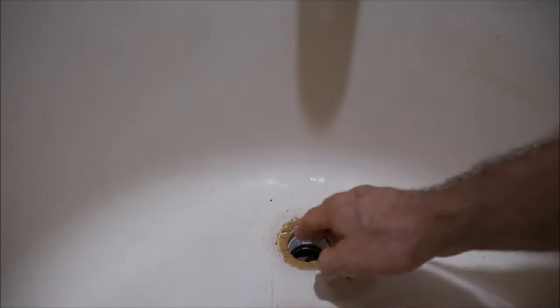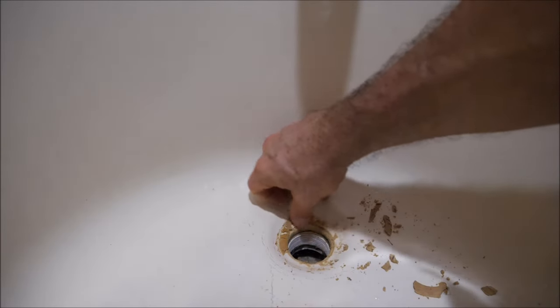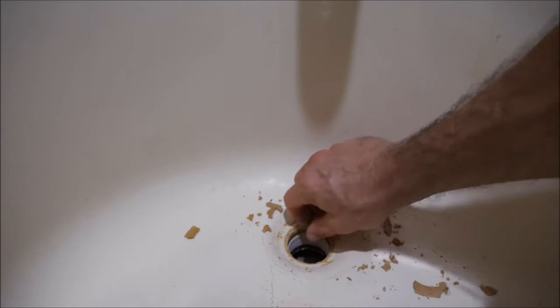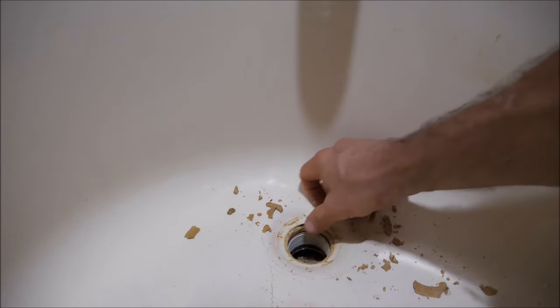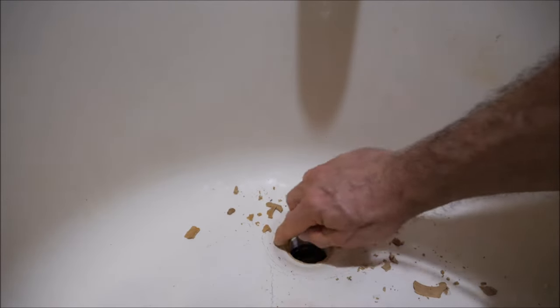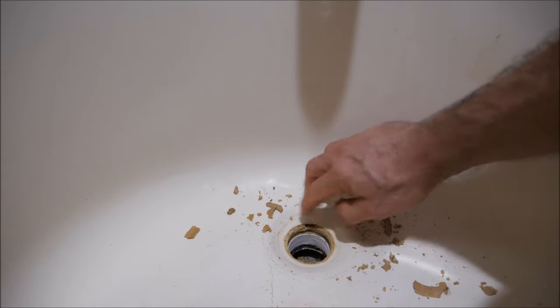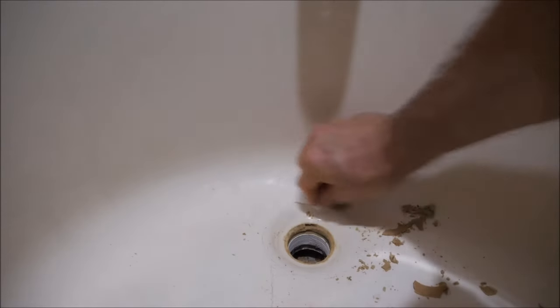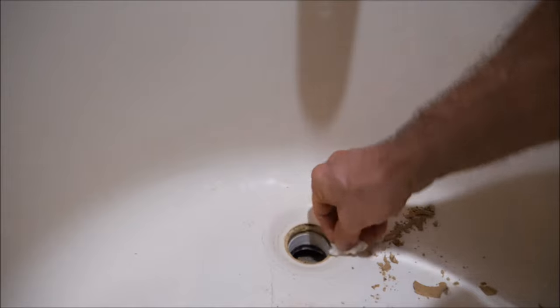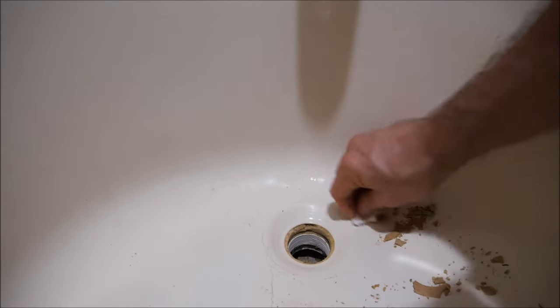All right, naturally before you put the new drain in, you want to get rid of the old plumber's putty surrounding the drain. This just creates a seal and a barrier and ensures that the water goes down the drain instead of around it. I'm going to use a rag to clean this up here, just create a clean, dry surface for the new drain.